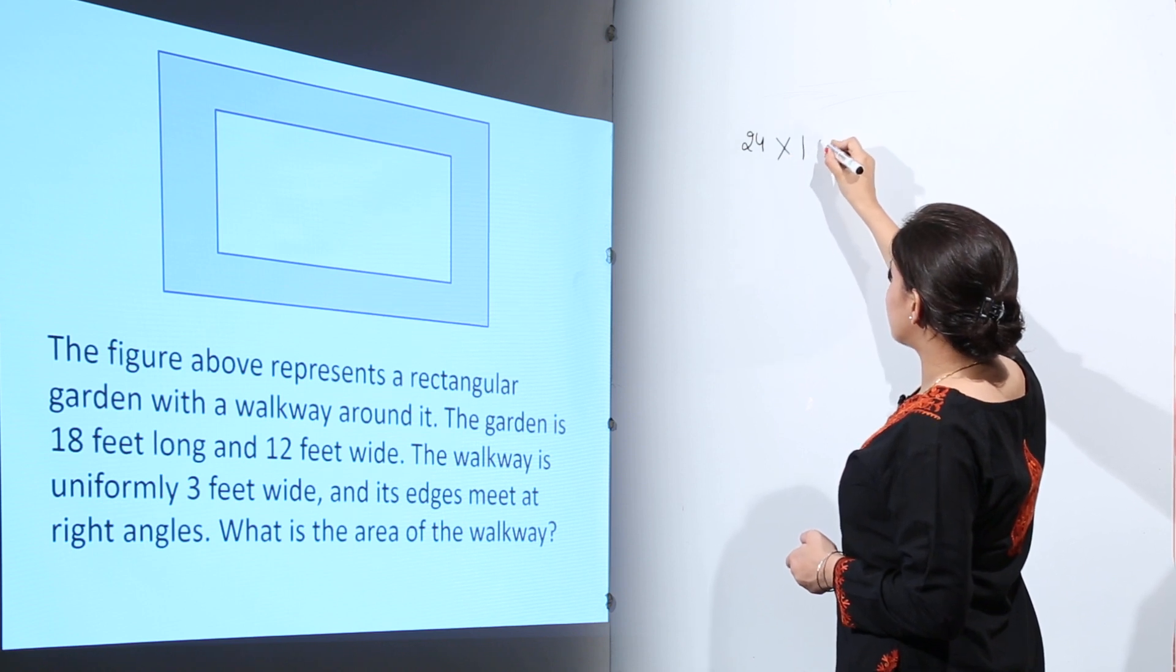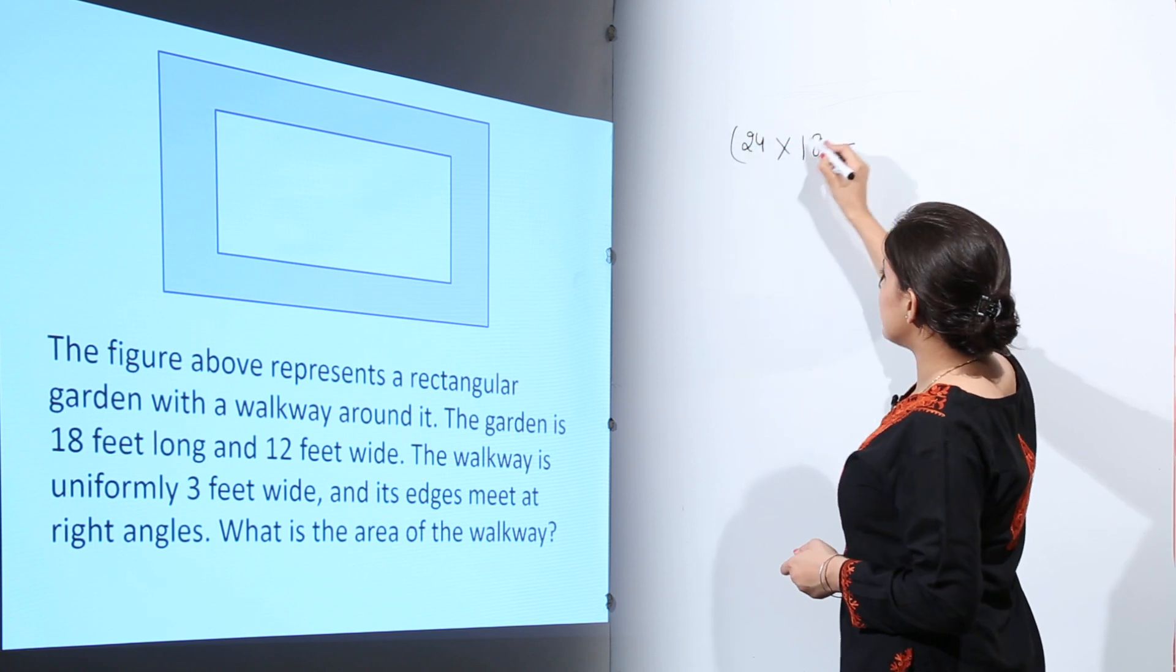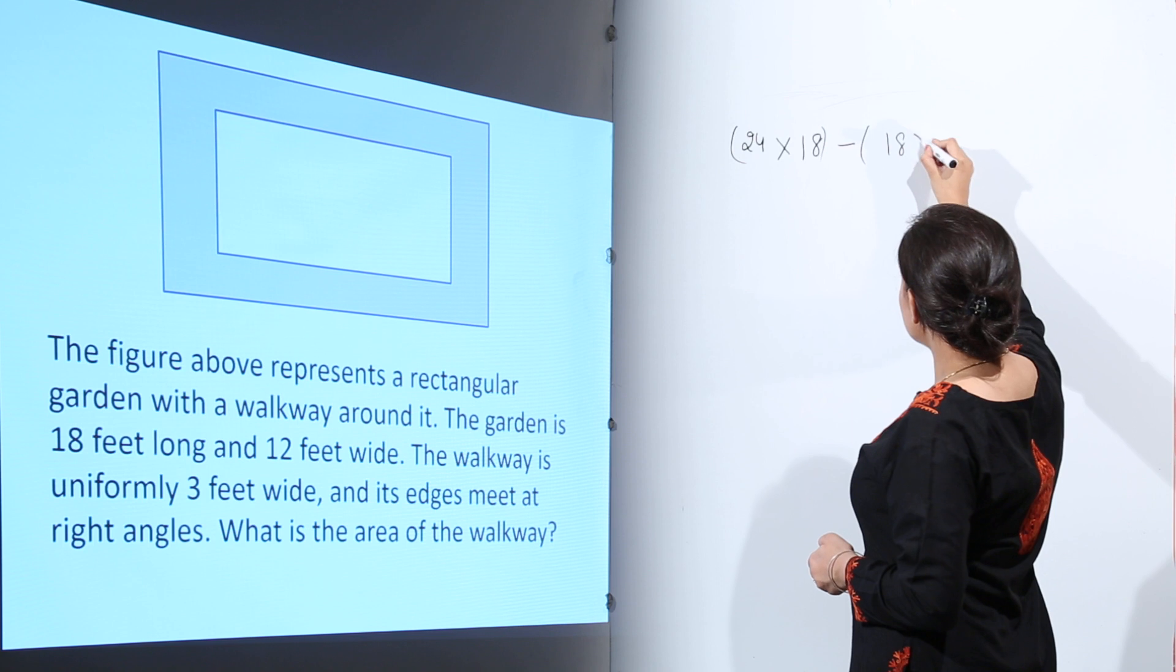So the area of the bigger rectangle is 24 into 18, and the area of the smaller rectangle is 18 into 12.